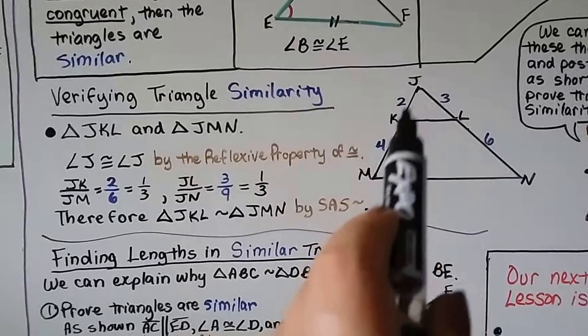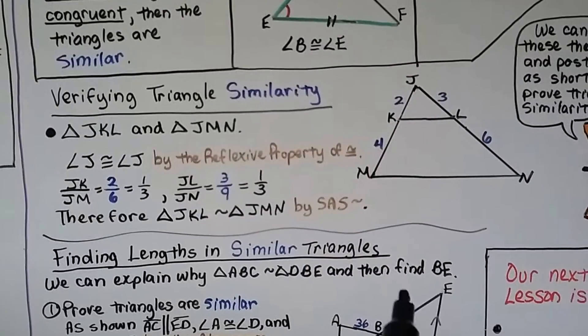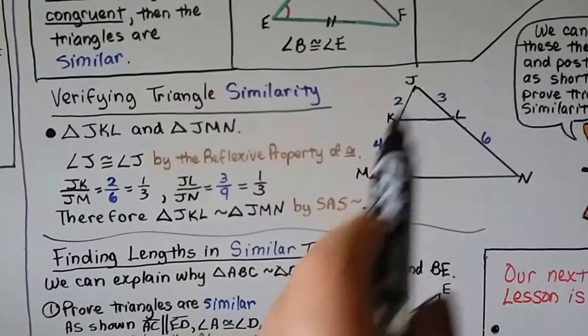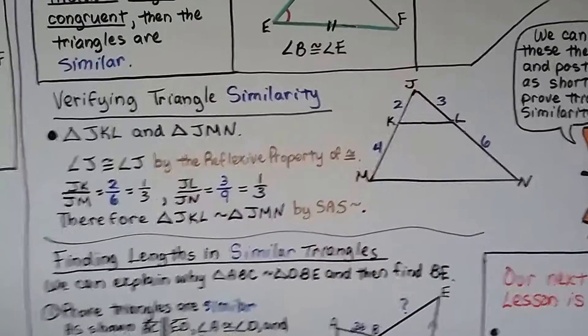JK, this little piece right here is a 2, is corresponding to JM, and 2 plus 4 is a 6. So we've got 2 over 6. That's a one-third.